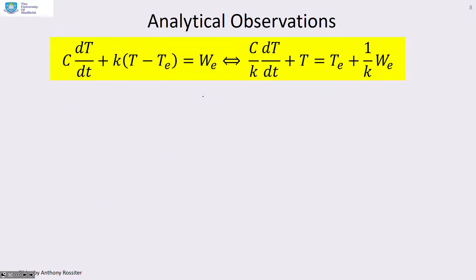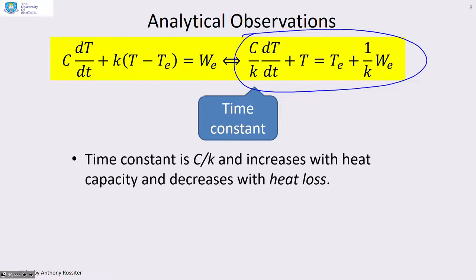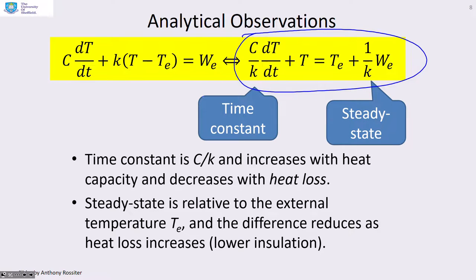Let's back up our observations from the simulation with some analysis. Here's the equation put into time constant form: you can see the time constant is C over k, so it increases as you increase C and decreases as you increase k. The steady state is Te plus W over k, so the steady state depends on external temperature, and the difference above external temperature is W over k — as k gets bigger, that difference gets smaller.